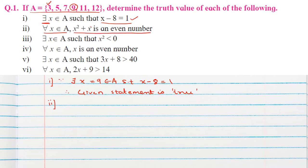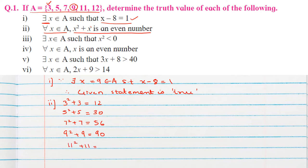For all x belongs to A, x squared plus x is an even number. We check each element: 3² + 3 = 12, 5² + 5 = 30, 7² + 7 = 56, 9² + 9 = 90, 11² + 11 = 132, 12² + 12 = 156. All results are even numbers.